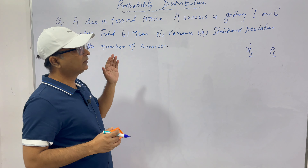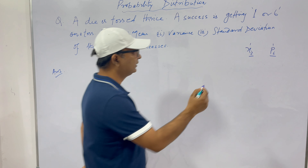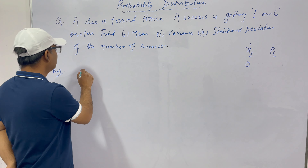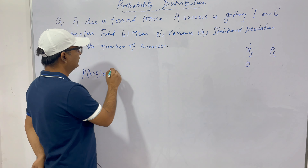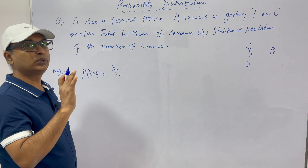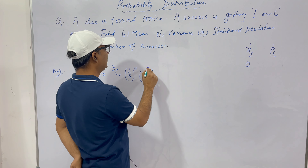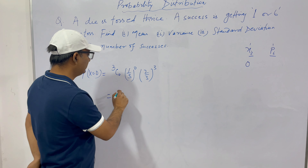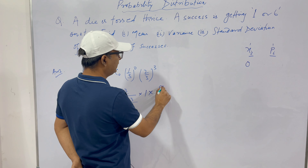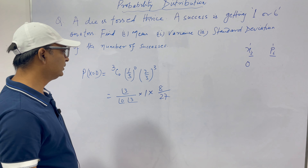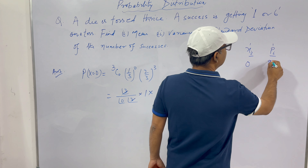We throw the die three times. The variate can be zero — that is, we get no success at all. P(X = 0) = 3C0 × (1/3)^0 × (2/3)^3. Calculating: 3C0 = 1, (1/3)^0 = 1, and (2/3)^3 = 8/27. So the probability for X = 0 is 8/27.